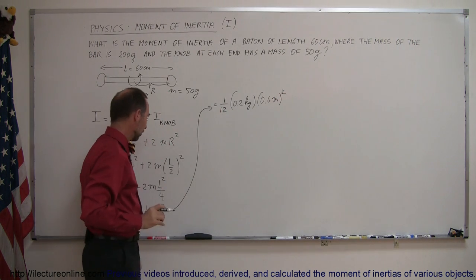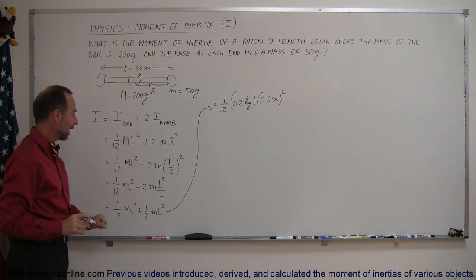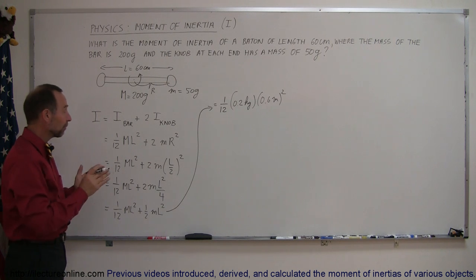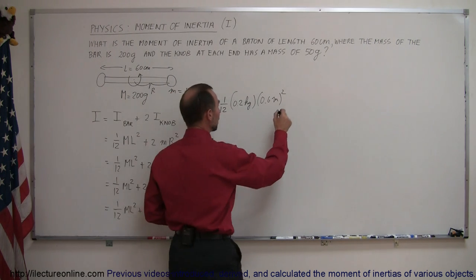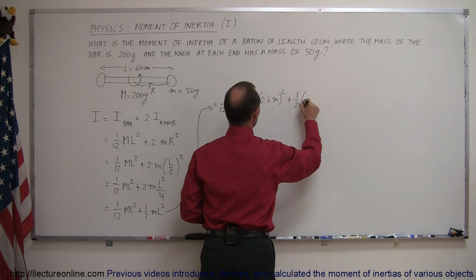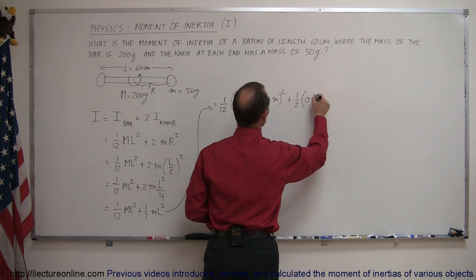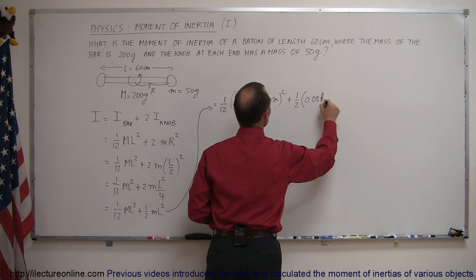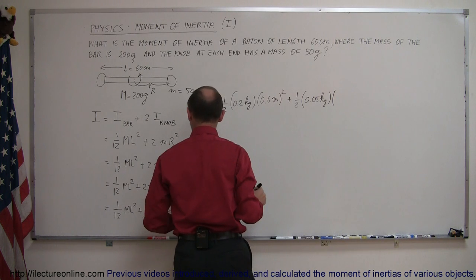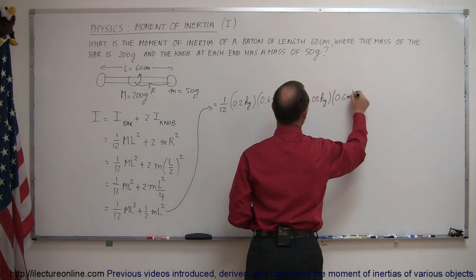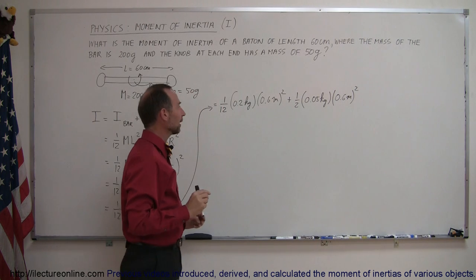So that would be the moment of inertia of the bar plus 1/2 ml squared. That's the moment of inertia of both knobs at the end. So that would be plus 1/2 the mass of the knob which is 0.05 kilograms times the length which is 0.6 meters and we square that.